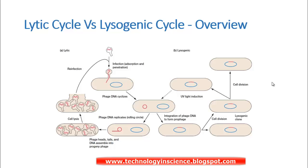Here is the overview of the whole process. You can see on the left there is the Lytic Cycle phase. In the Lytic Cycle, the bacteriophage attaches to the bacteria either through adsorption or penetration, and they inject the genetic material — the viral DNA — into the bacterial cell. They create a pore and using their machinery, they inject the viral genetic material into the bacterial cell.